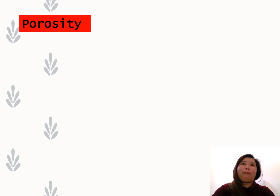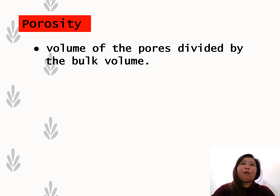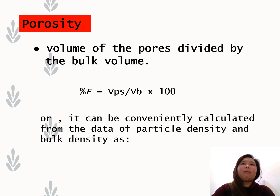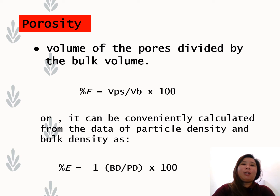Now let's move on to discussing soil porosity. Porosity refers to the volume of pores divided by the bulk volume. The formula is: percent E equals the volume of pore spaces (VPS) divided by the bulk volume (VB), multiplied by 100. It can also be conveniently calculated from particle density and bulk density as: percent E equals 1 minus bulk density divided by particle density, multiplied by 100.